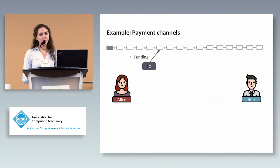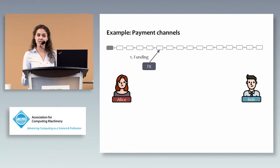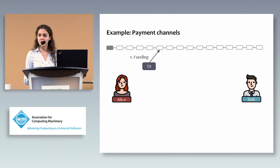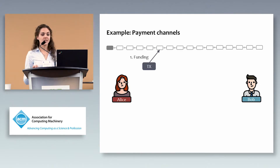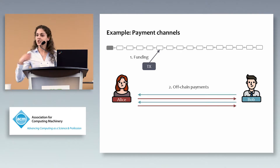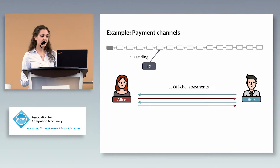A very important example of off-chain techniques are so-called payment channels. Assume we have Alice and Bob who want to exchange many transactions. First, they put a funding transaction on the blockchain saying they want to trade with each other. Initially, Alice's balance is five coins and Bob's is two coins.